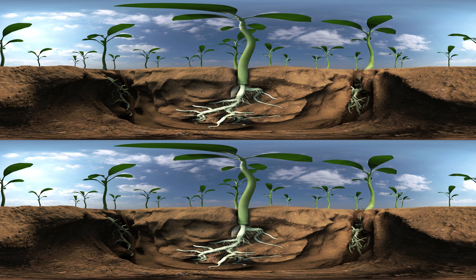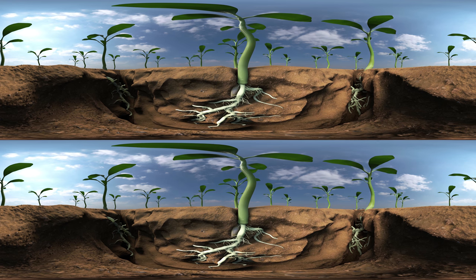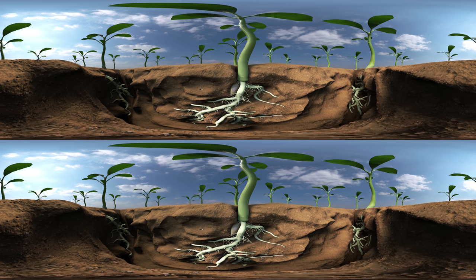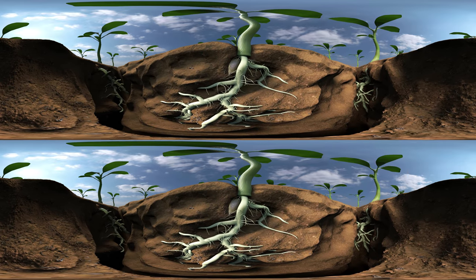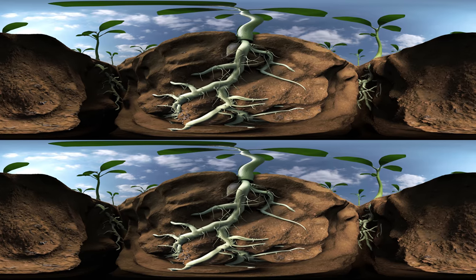Nematodes are responsible for heavy yield and crop losses in fruits and vegetables all over the globe. Tiny eel worms, like the root knot nematode, live in the soil and the larvae attack plant roots.